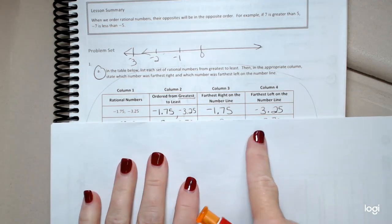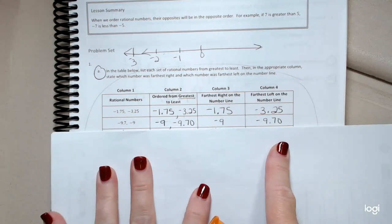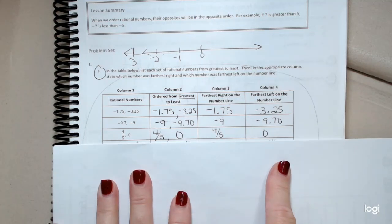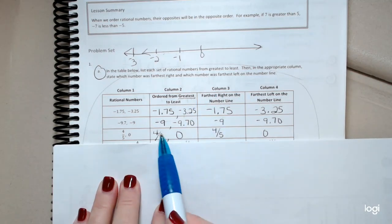So we did this first one together and the second one. Let's look at the third one, the next one. Remember, we're putting them in order from greatest to least.